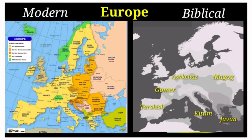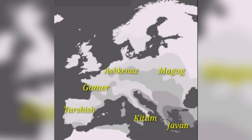Here we have two maps — one of modern Europe and the other of Biblical Europe on the right. If you are not a student of Biblical history, you may not be familiar with the names of the countries or nation-states of Biblical ancient Europe. Tarshish is the place where Spain stands today. Gomer is the ancient name of France. Ashkenaz, the ancient name of Germany. Magog, the ancient name of Russia. Kittim, the ancient name of Italy and Cyprus. And Javan, the ancient name of Greece.